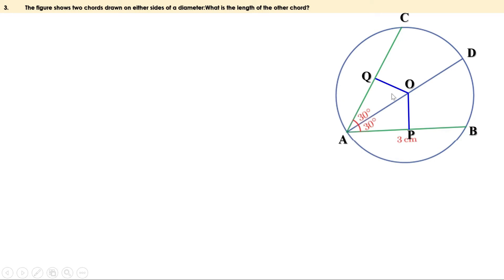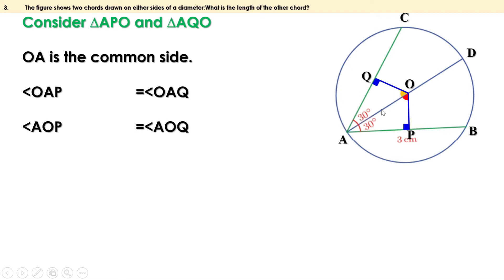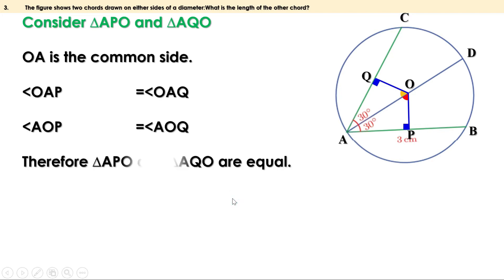Now consider the two triangles: triangle APO and triangle AQO. OA is common for both triangles. It is given that angle OAP and angle OAQ are equal. We know these two angles are 90 degrees because OP and OQ are perpendicular to the chords. Therefore these two angles are equal, and hence the third angles of the triangles are also equal — that is, angle AOP equals angle AOQ.